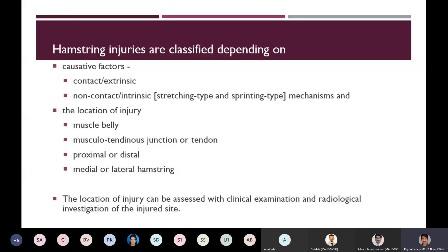Hamstring injuries can be classified based on causative factors as contact and non-contact injuries. Non-contact injuries are further classified into stretching type and sprinting type based on the mechanism. The location of injury could be in the muscle belly, musculotendinous junction, or tendon — proximal or distal — or in the medial or lateral hamstring muscle, and can be assessed with clinical examination as well as radiological investigation.